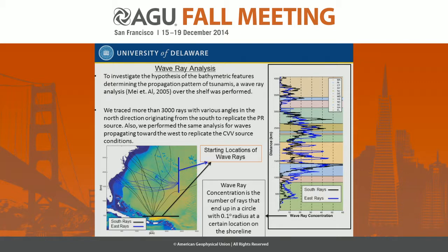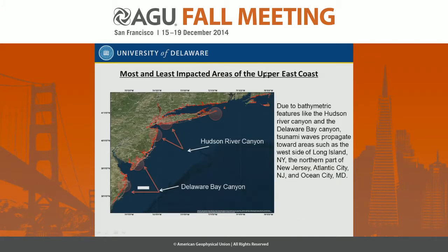Having this wave ray analysis alongside our inundation maps, this is the inundation line for the areas we modeled for the Upper East Coast. We can say that for areas like Atlantic City and Ocean City, due to the presence of the Delaware Bay Canyon — a V-shaped bathymetric feature — the tsunami waves get refracted toward Ocean City and Atlantic City. The same thing happens in the northern part of this domain: due to the Hudson River Canyon, the waves get refracted toward northern New Jersey and western Long Island, and those are the areas that will receive the most tsunami impact.